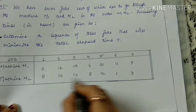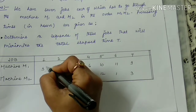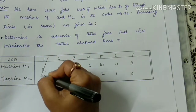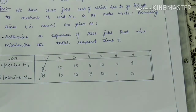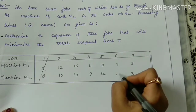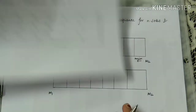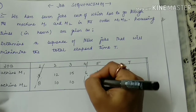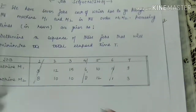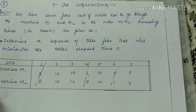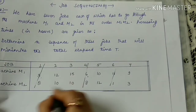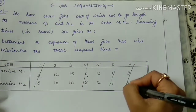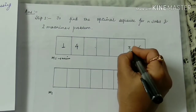For M2, the first job requiring minimum time is job 6, requiring 1 hour. So we write job 6 on the right-hand side. Next for M1, the minimum time is required by job 4, so we write it here. Then for M2, job 7 requiring 3 hours is next minimum.